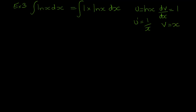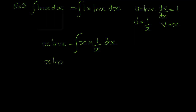Putting it all together: start with u times v, which is x ln(x), minus the integral of v times du/dx — that's x · (1/x) dx. Simplifying, we just have 1 to integrate, which is nice and easy. So the final answer is x ln(x) − x + c.